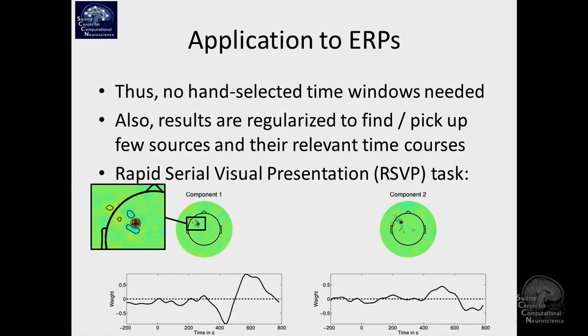And another component, which is actually a dipole. It's in a similar location. And its associated time course, which is slightly different. So you can say it learned two sources, which are maximally predictive of whether the person saw a target or not. And it actually also works reasonably well. So it has an area under the curve of 0.9 or something like that.